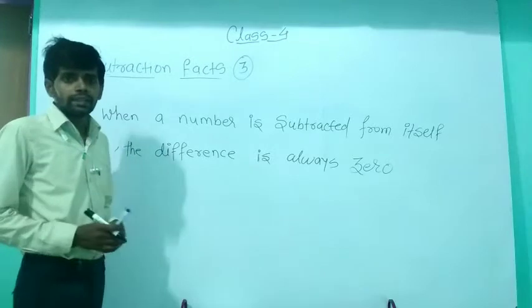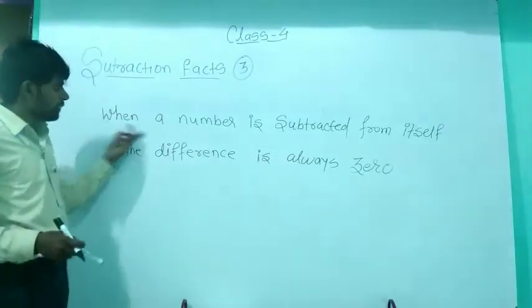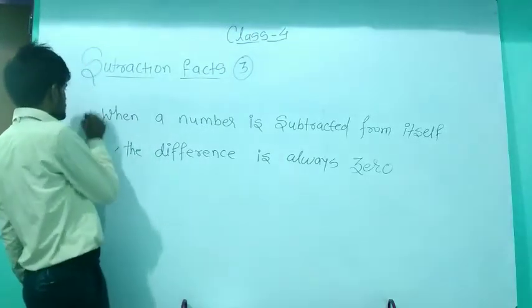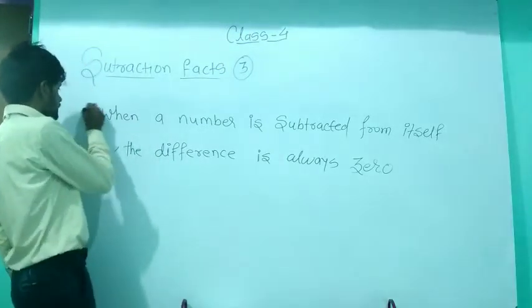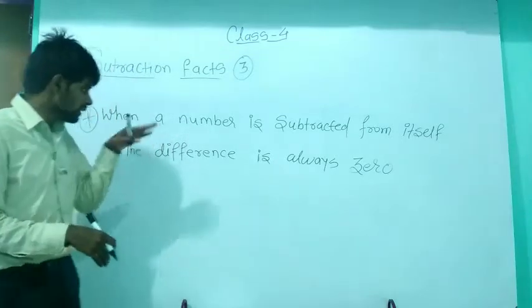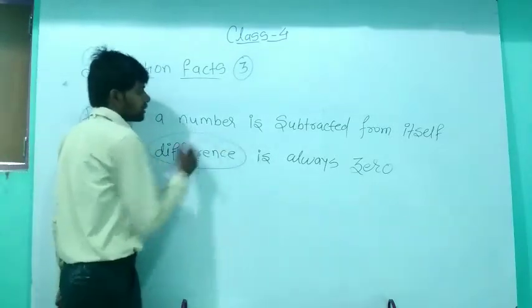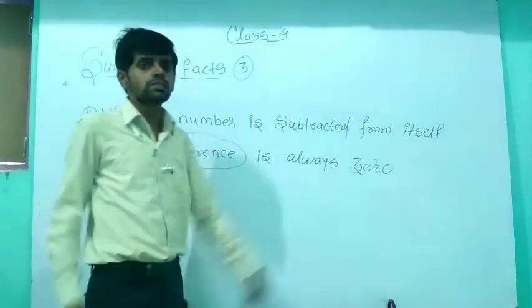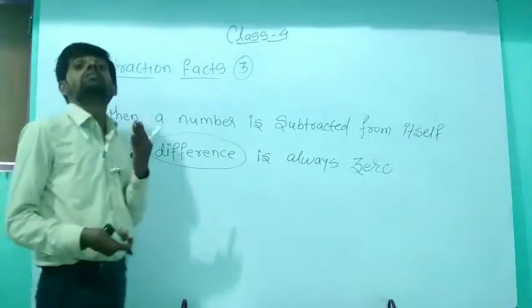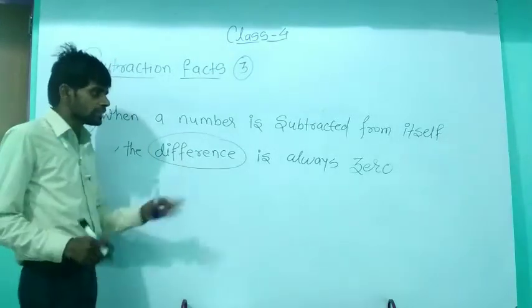Let's see the third and last subtraction fact. When a number is subtracted from itself, the difference is always 0. If you subtract any number from the same number, the answer is always 0.